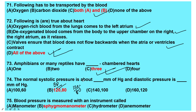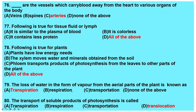Blood pressure is measured with an instrument called a sphygmomanometer — do remember that. Arteries are the vessels which carry blood away from the heart to various organs of the body.